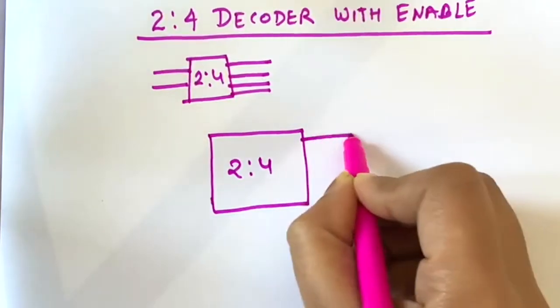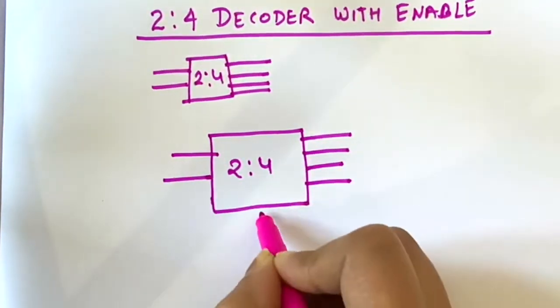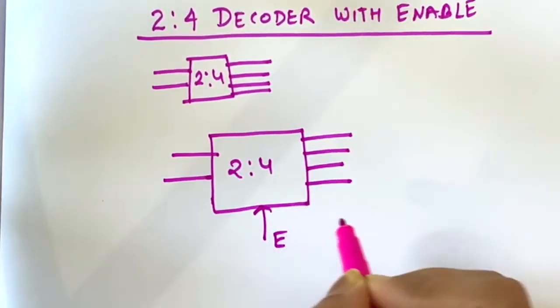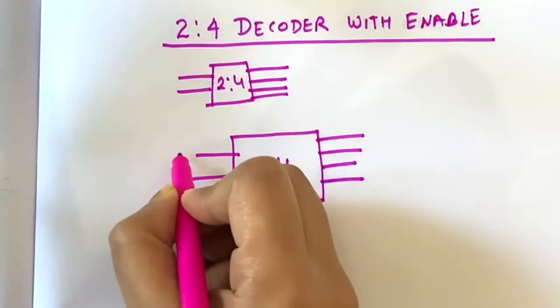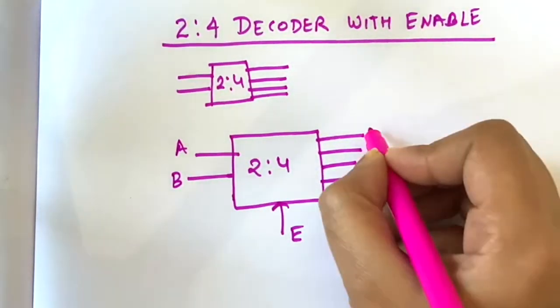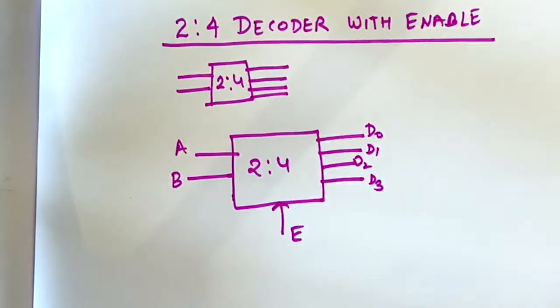Suppose this is 2-to-4, four output lines and two input lines, and here there will be enable. Let's say A and B are inputs and D0, D1, D2, D3 are output lines.